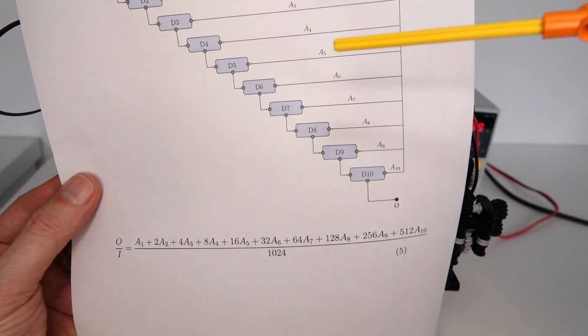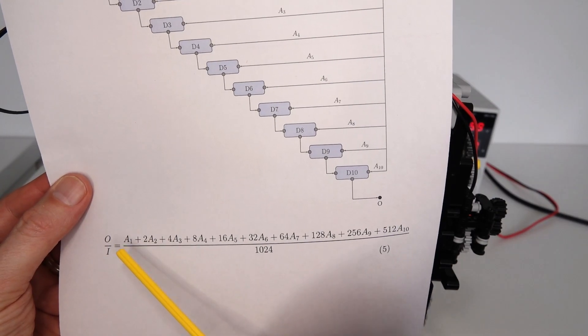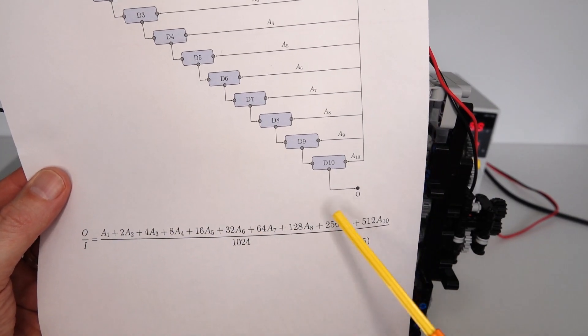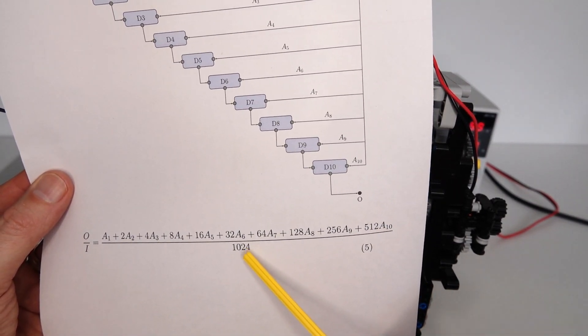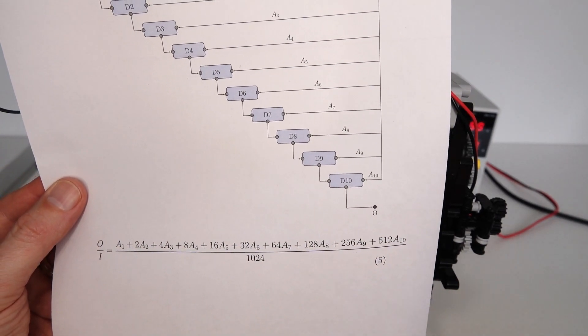If you go through the mathematics and work out the relationship between the output and input, it's given by A1 plus 2 times A2 plus 4A3, all the way up to 512 times A10. All of that divided by 1024. Now you'll probably recognize the top line as a binary number expansion.